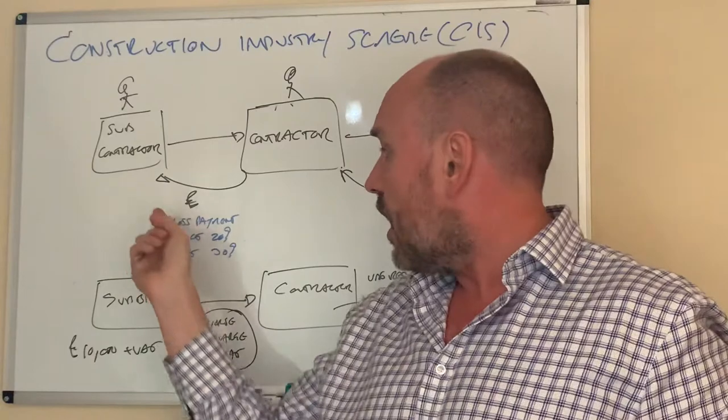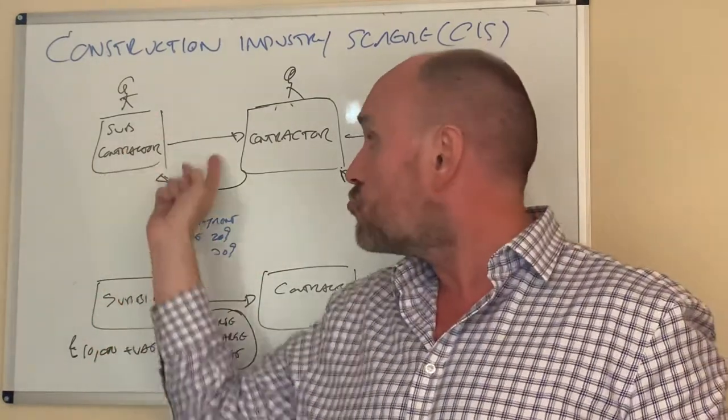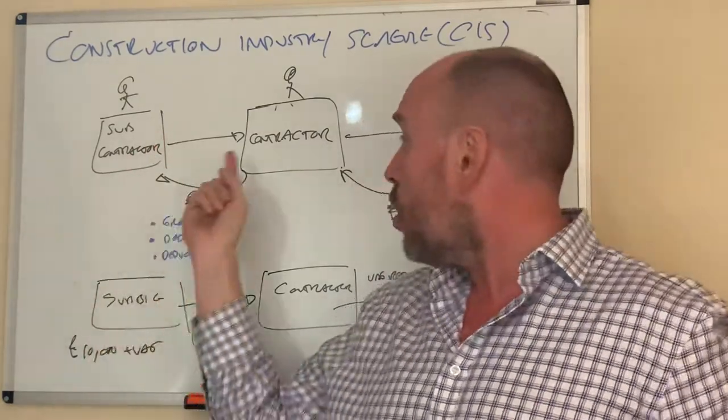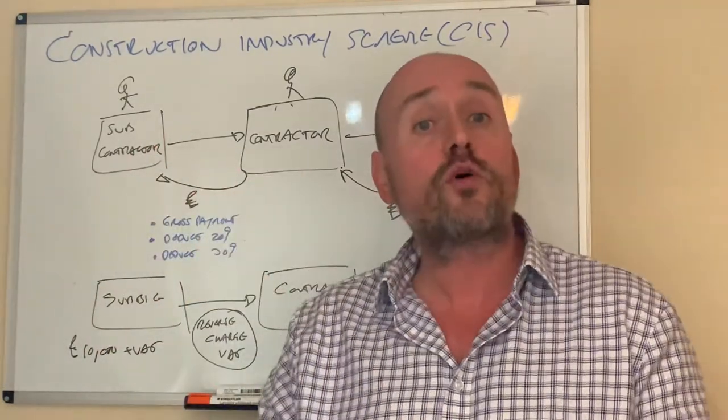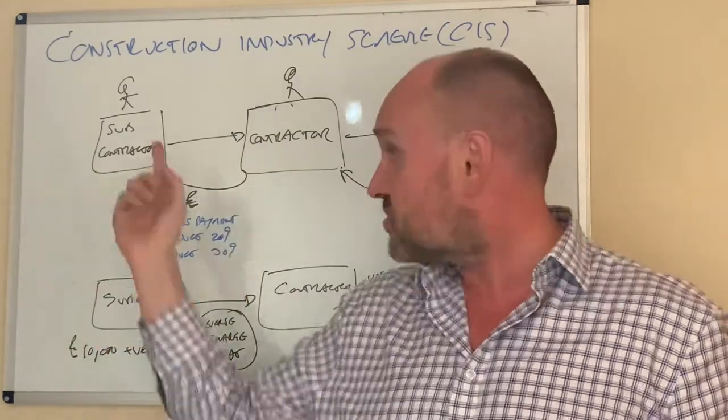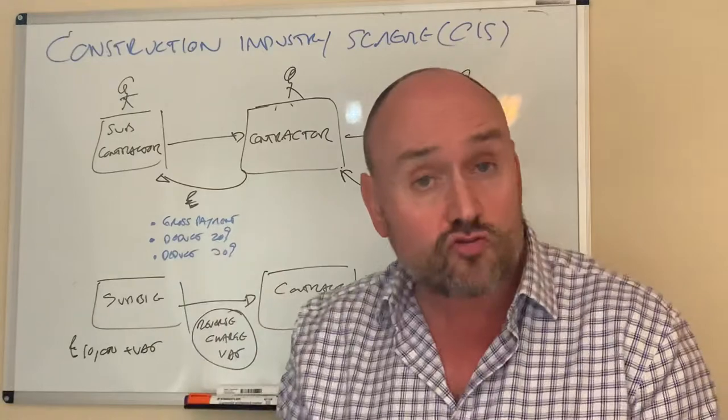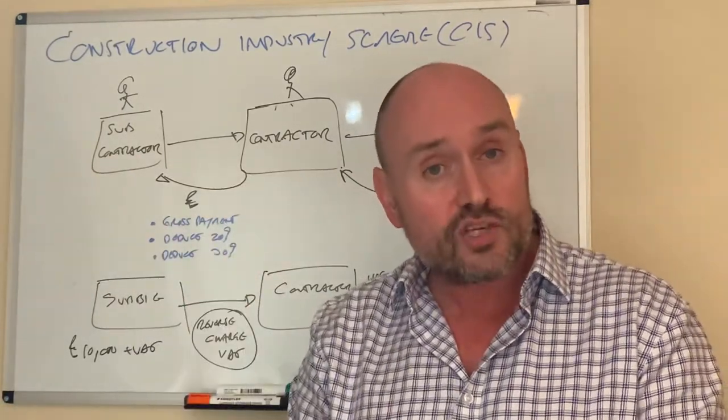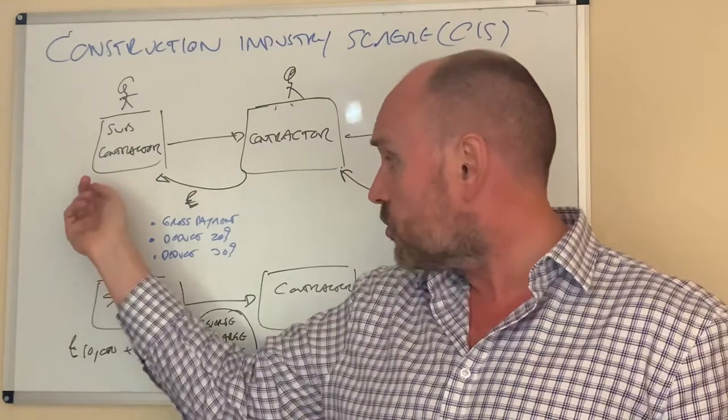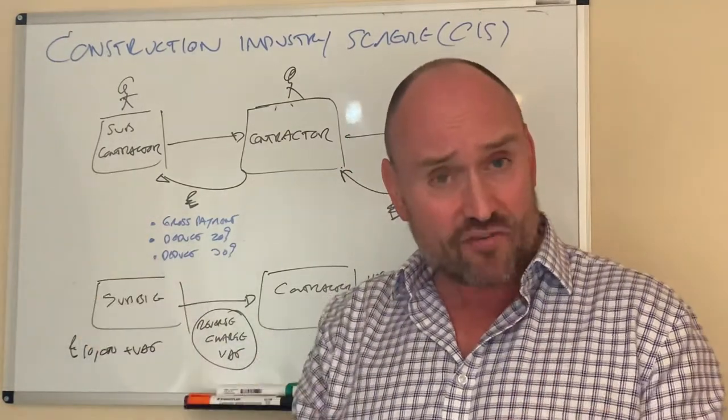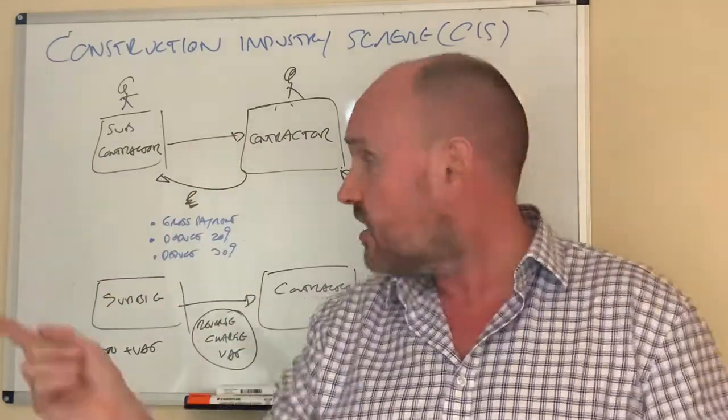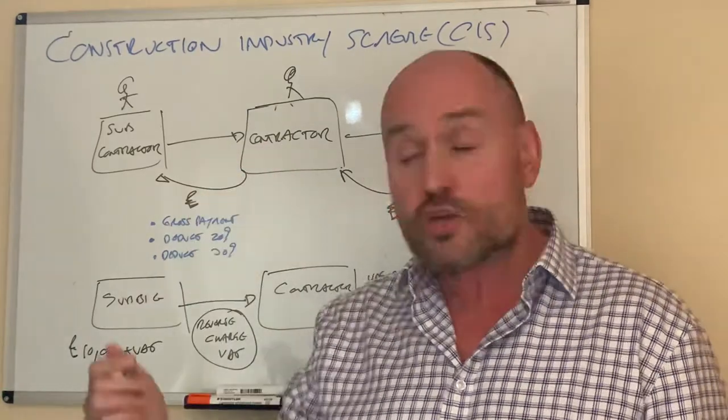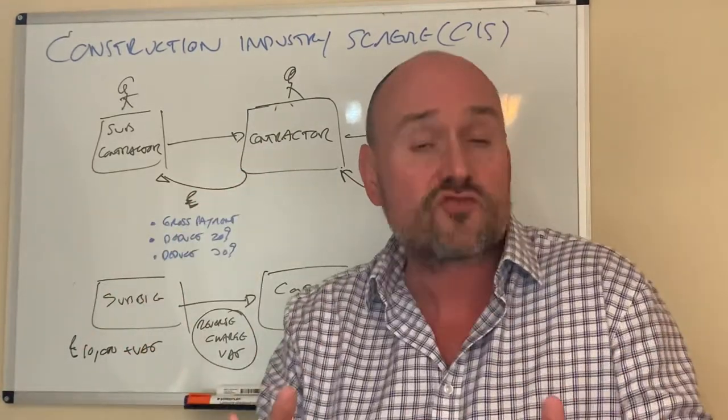If they don't have gross payment status and they are not registered under the CIS, because normally these guys have to get registered, if they're not registered, automatically the contractor withholds 30% from the invoice. So on a £10,000 invoice from subbie to contractor, contractor would knock off £3,000, pay this guy £7,000 and £3,000 goes off to HMRC. Now, of course, if this guy is still a basic rate taxpayer, he's suffered too much tax. He's got £7,000 in his hand. This guy's taken off £3,000, but really should've only taken off £2,000. But the fact that he hasn't registered for CIS, that's his fault.